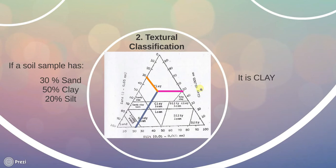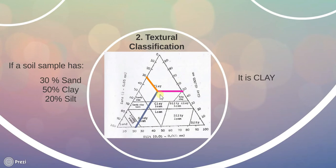According to the textural classification system, the percentages of sand (size between 2 mm to 0.05 mm), silt (size 0.05 mm to 0.005 mm), and clay (size less than 0.005 mm) are plotted along three sides of an equilateral triangle. The equilateral triangle is divided into 10 zones, each zone indicating a type of soil. The soil can be classified by determining the zone in which it lies.